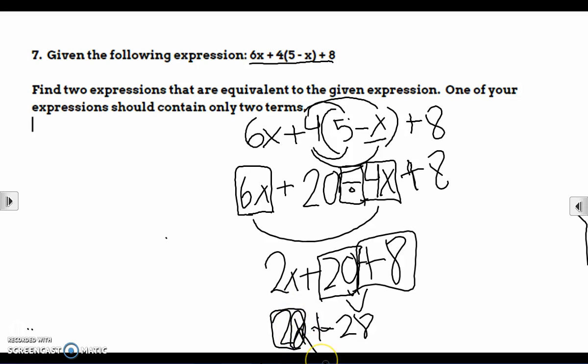See, this one has a variable and this one is just a number. Right, what do we call that number if it's just without a variable? Um... It's a constant. A constant. It doesn't change. Okay?